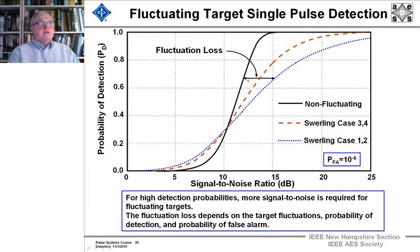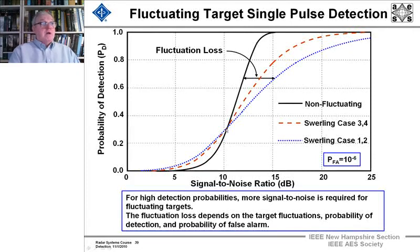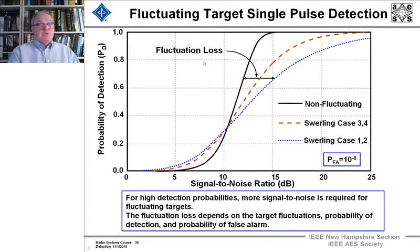We see that for high detection probabilities, more signal-to-noise ratio is required. For a Swerling case 1 and 2 target, to get 95% probability of detection, on the order of 12 dB greater SNR is required, whereas for probabilities of detection around 0.3, the signal-to-noise ratio is about the same. This difference between the non-fluctuating target and the fluctuating target is what we call the fluctuation loss, and that needs to be put into the radar equation.